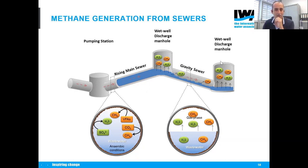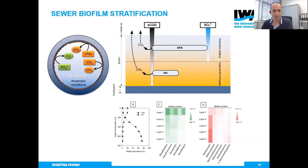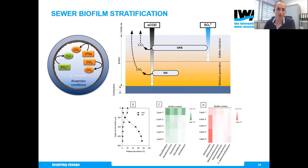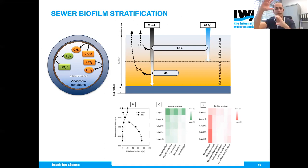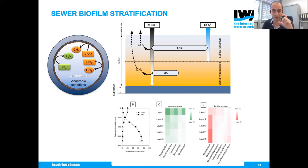Through experiments on sewer biofilm samples, we saw that methane production was possible thanks to stratification — the different location of microbial communities within the biofilm. Here's how: in a section of the biofilm, which is a few millimeters thick attached to the pipe wall, the sulfate-reducing bacteria tend to sit on the outer parts, consuming sulfate and releasing sulfide into the liquid phase.